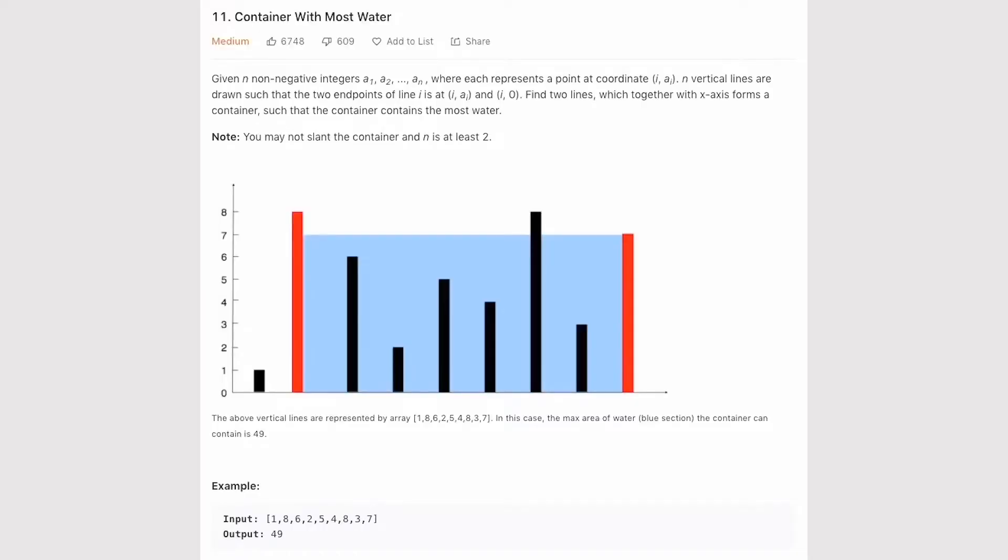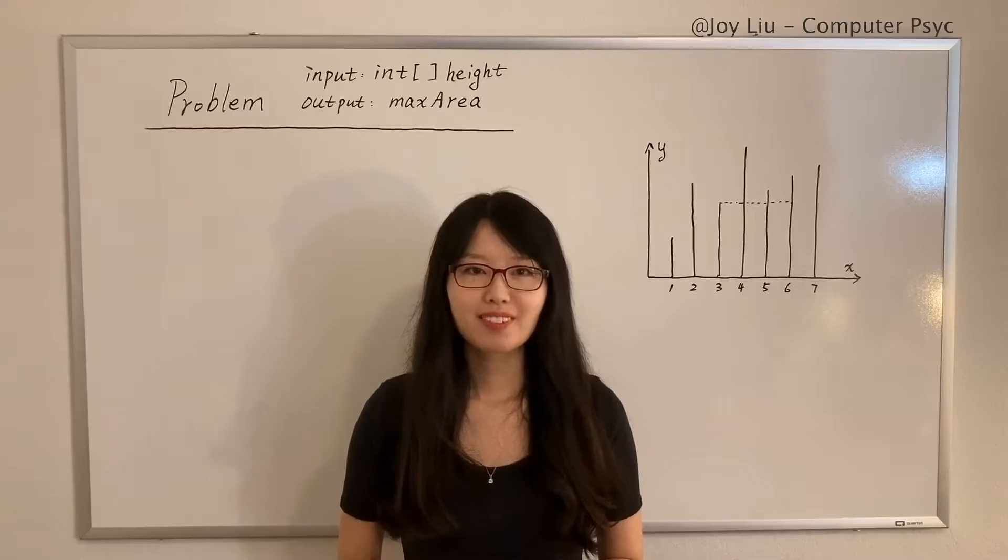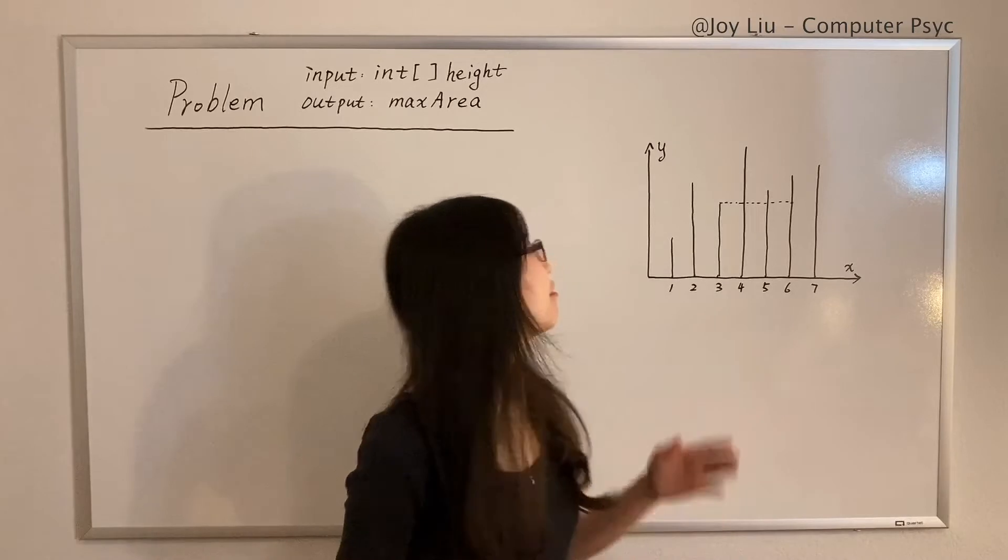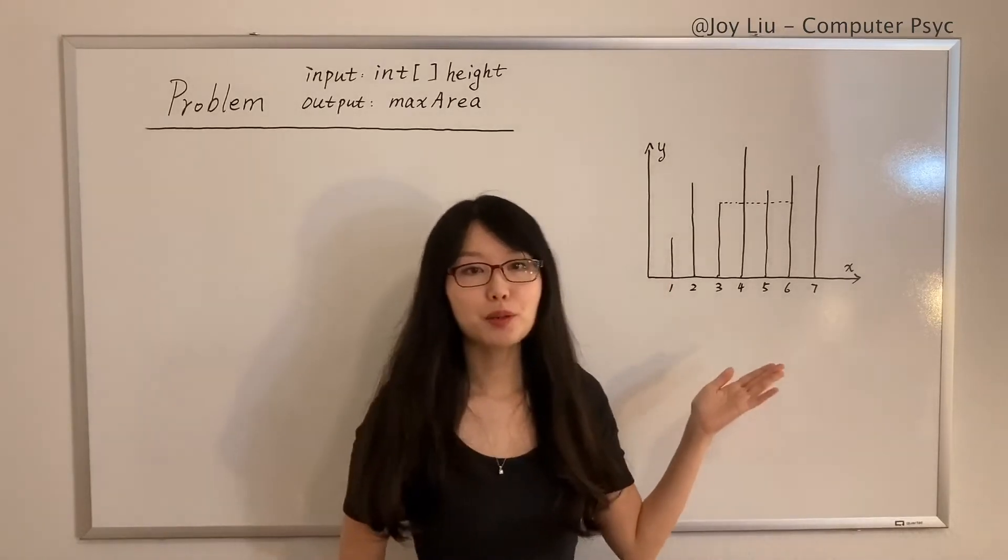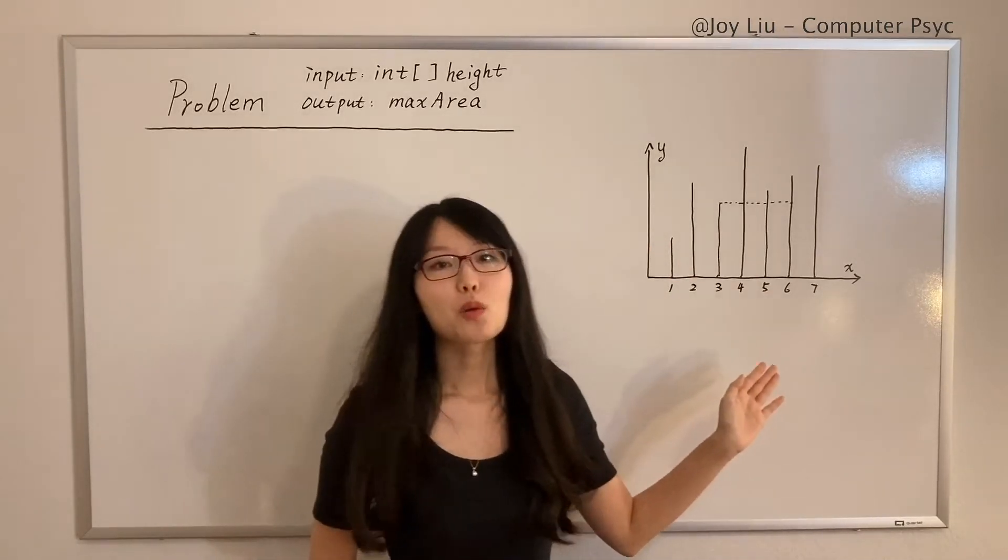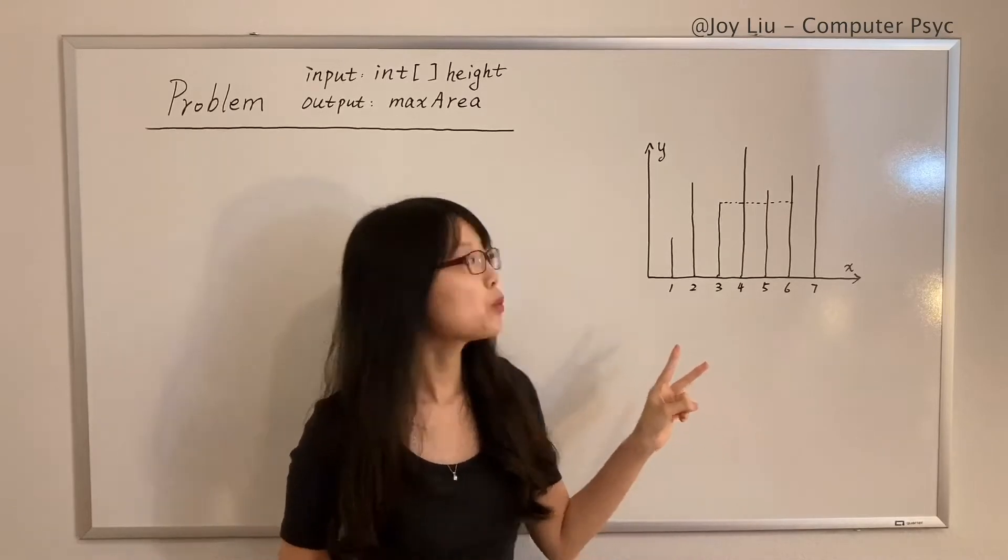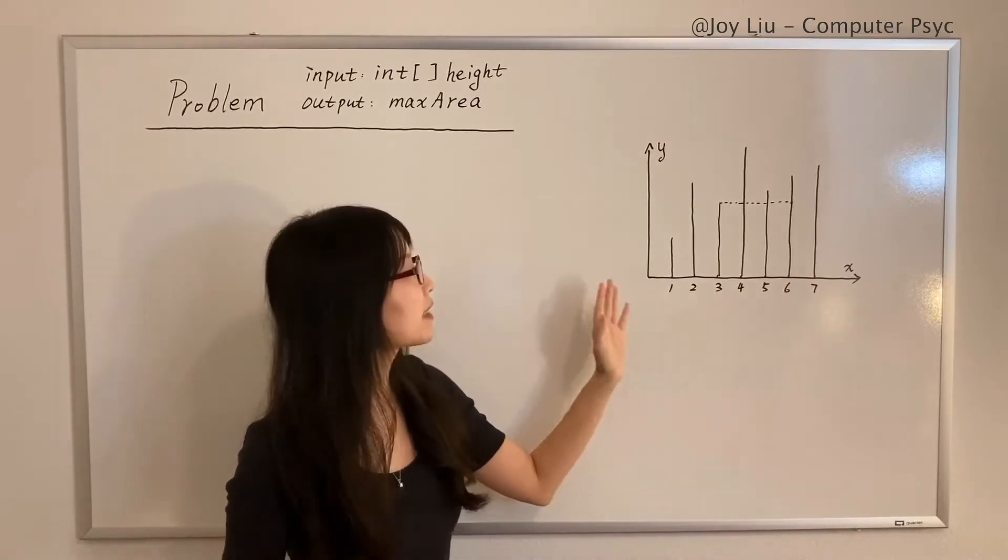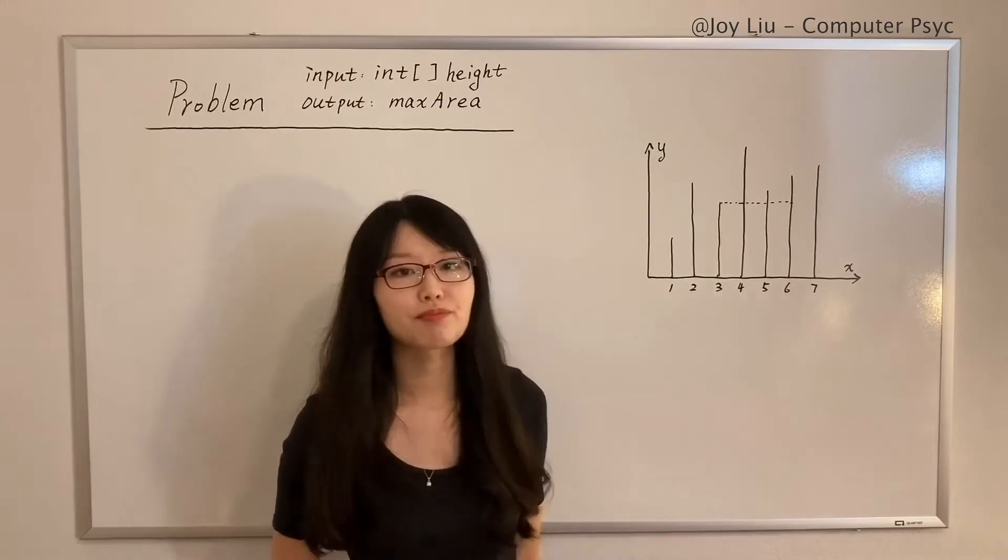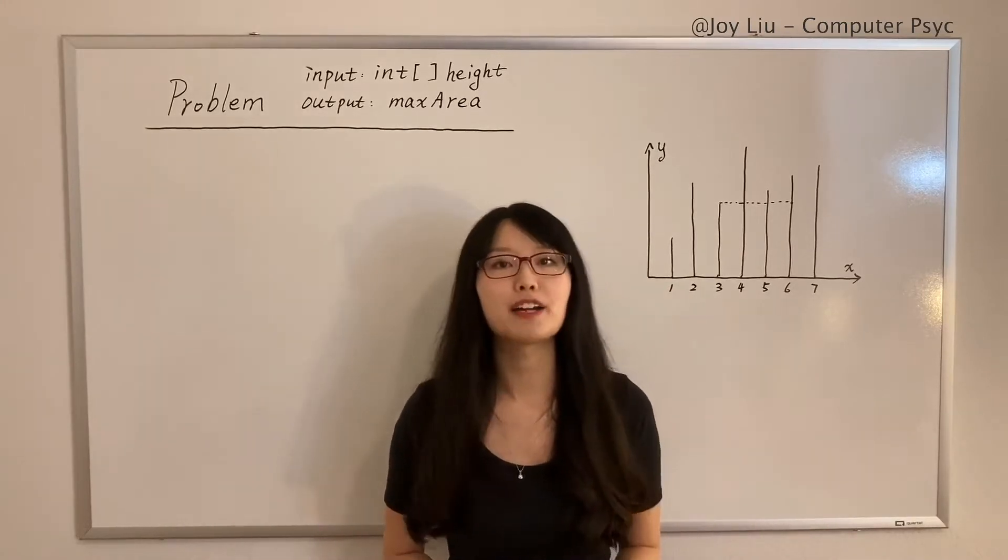This problem has n vertical lines. For example, we have seven lines here. We can use two lines together with the x-axis to form a container, like line 3 and 6.